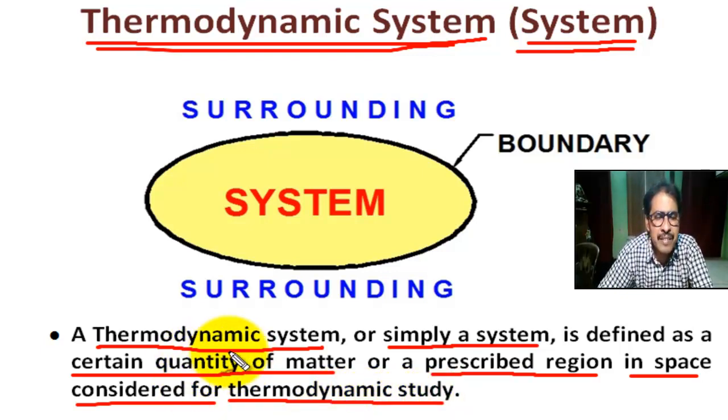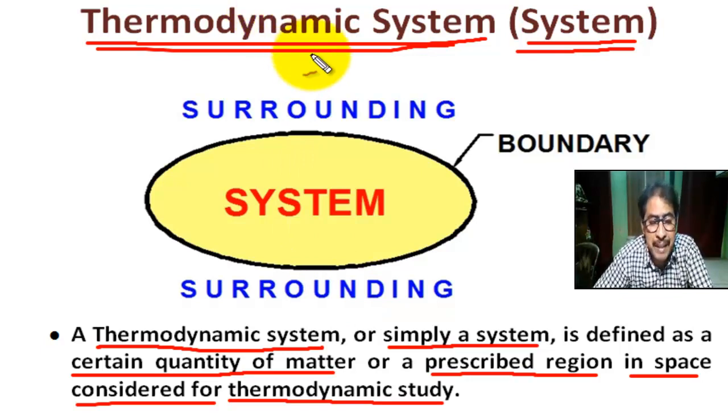A system is defined as a quantity of matter bounded by some closed surface which is being investigated. Again, a thermodynamic system can be defined as a specified region within which change of energy or mass or both take place.